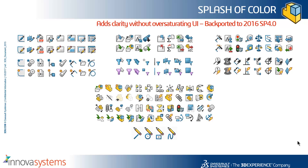Therefore, SOLIDWORKS decided to reintroduce those colors in SOLIDWORKS 2016 SP4. They're also available in SOLIDWORKS 2017. It is a case that you do need to turn these colors back on — by default they will continue to be blue and gray.